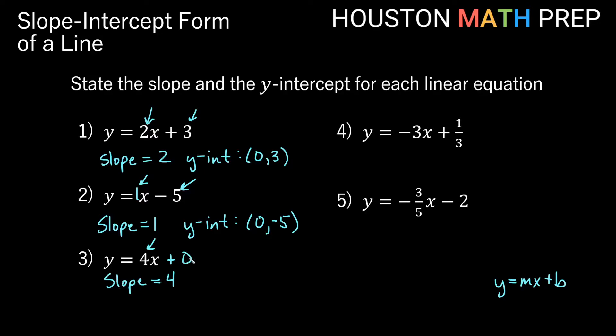And if our y-intercept is 0, that's really saying the point (0, 0). So we actually go through the origin on this one — y equals 4x.